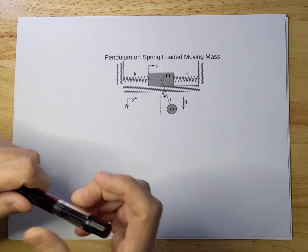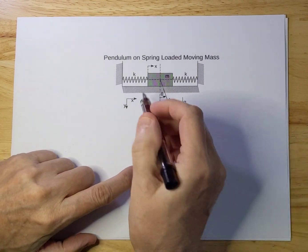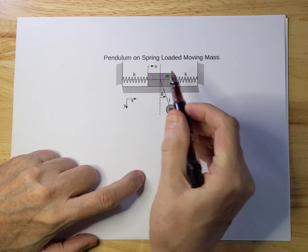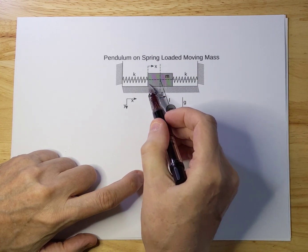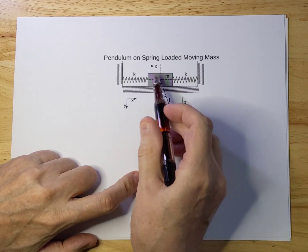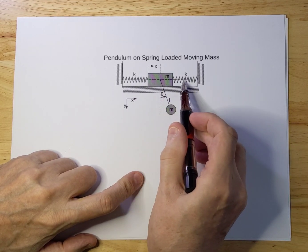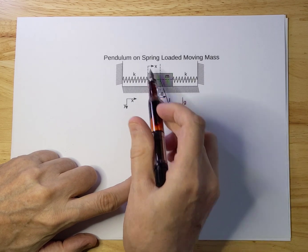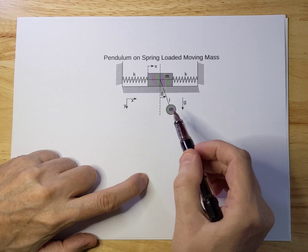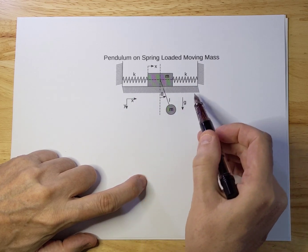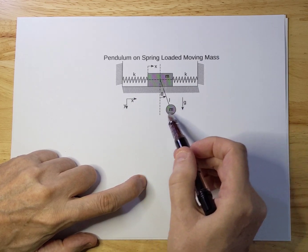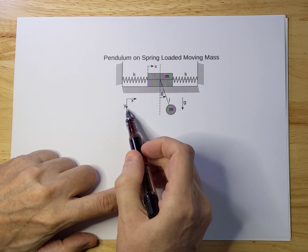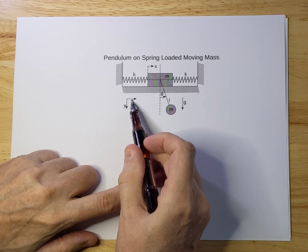Today I'm going to talk about a pendulum on a spring-loaded moving mass. You see the pendulum here that is attached to the mass. The mass is moving on a frictionless table and has two springs attached to it, one on the left and one on the right. The mass is moving back and forth horizontally, and the pendulum can swing back and forth in both the positive or negative x and y directions.